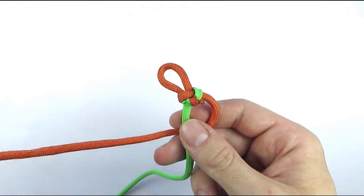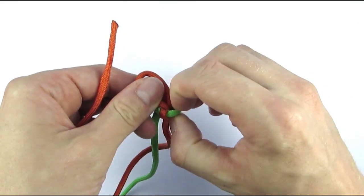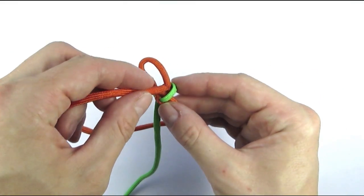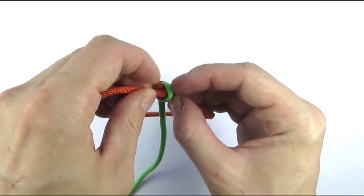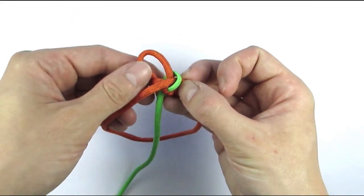And we can now continue lining up snake knots. I'm going to take the same color cord again, open up the last snake knot that we made, and insert the cord through the top again.